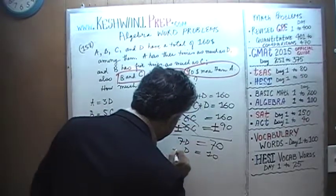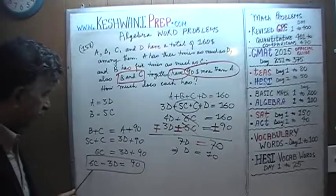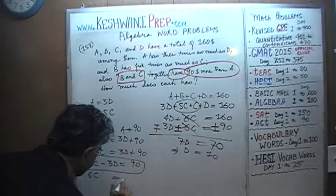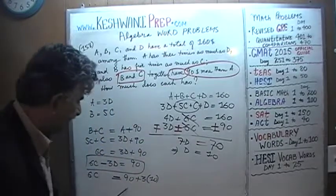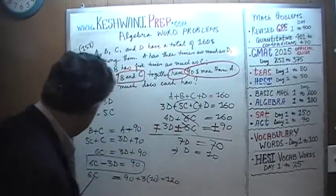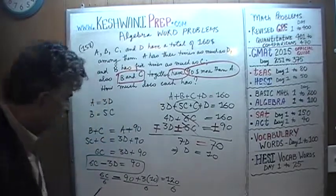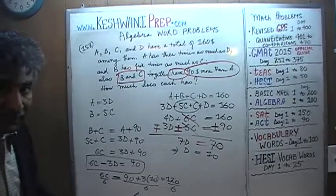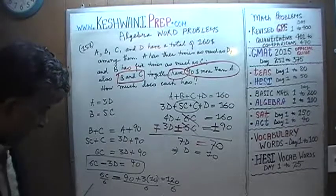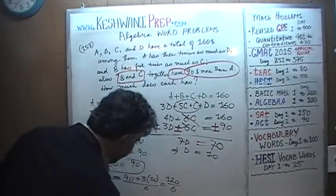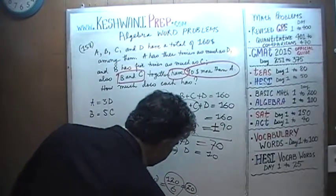160 minus 90 is 70, so 7D = 70, which implies D = 10. Once we know D, we can find C using the equation 6C − 3D = 90. Substituting D = 10: 6C = 90 + 30 = 120. Dividing both sides by 6 gives C = 20.